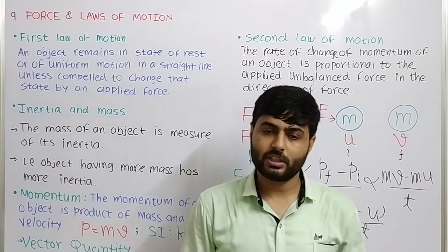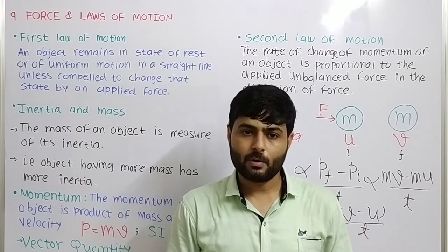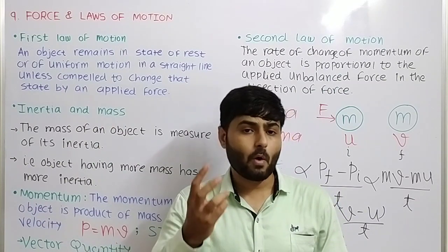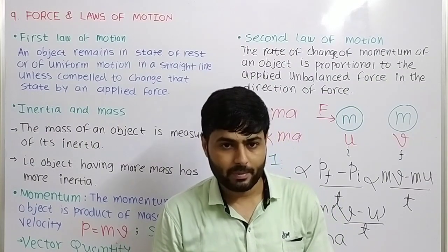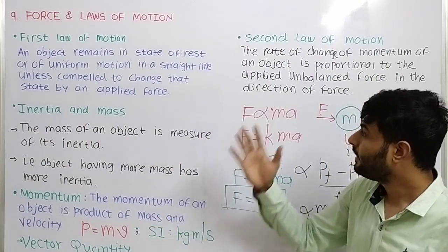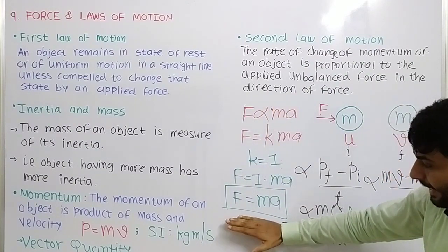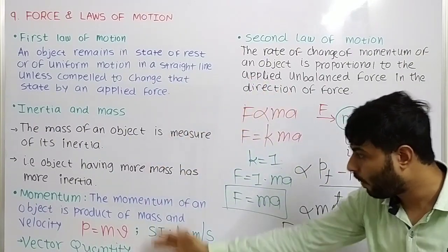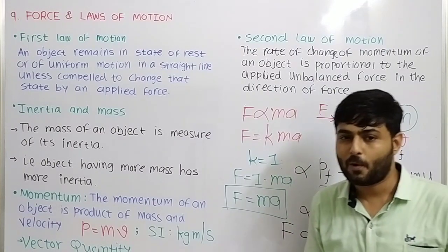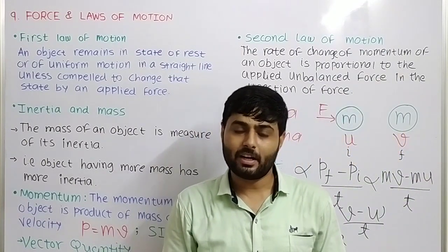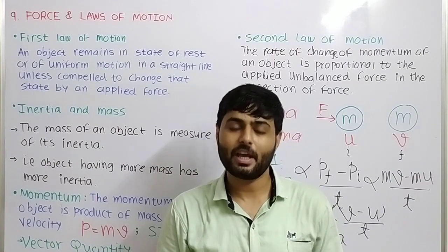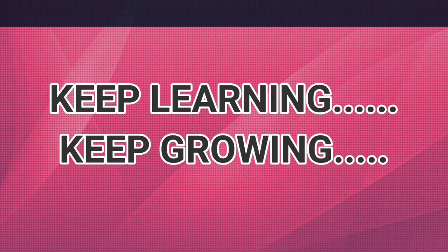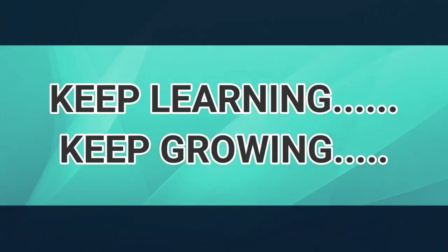Let's summarize this session. We have learned what inertia is, examples of inertia, what momentum is, examples of momentum, the second law of motion, and how to derive the formula F equals MA, along with the SI units of all these quantities. I hope you enjoyed this session and understood all the concepts. Thank you very much.